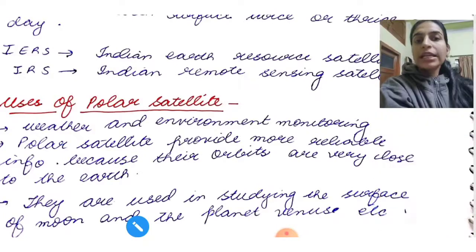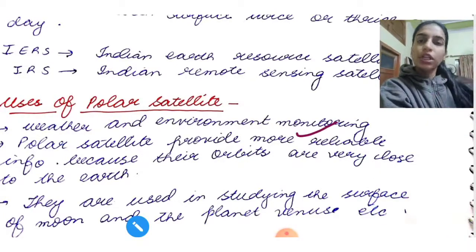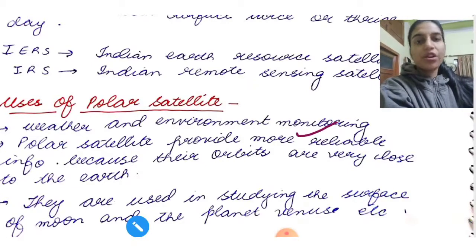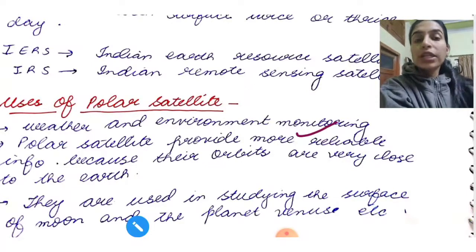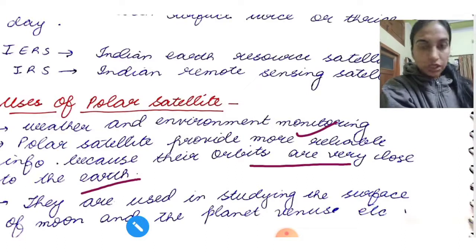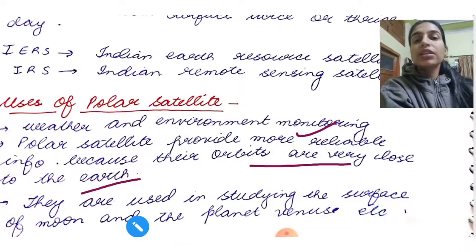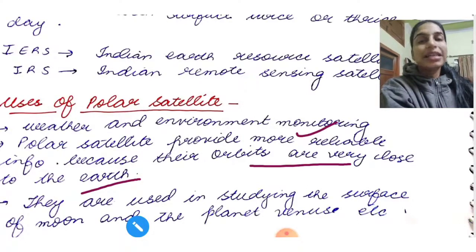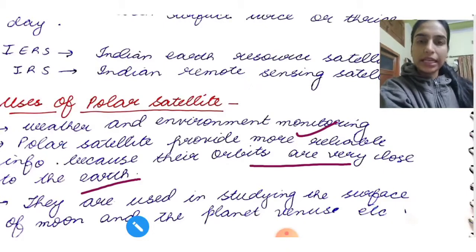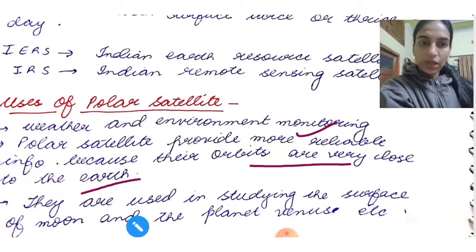So what are the uses of polar satellite? Weather and environmental monitoring. Basically, whatever functions your geostationary has, those will be here. In fact, better. Polar satellites provide more reliable information because their orbits are very close to the earth. They are used in studying the surface of moon and the planet Venus, etc. So this was all about the two types of satellites.